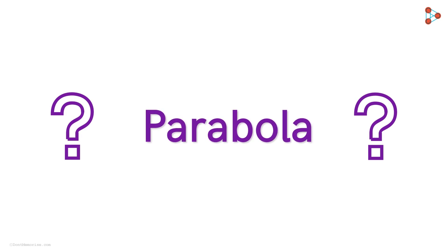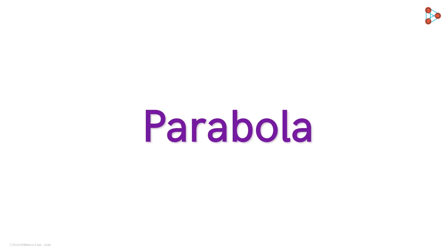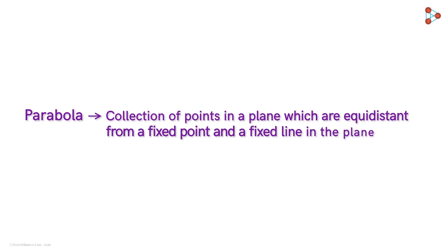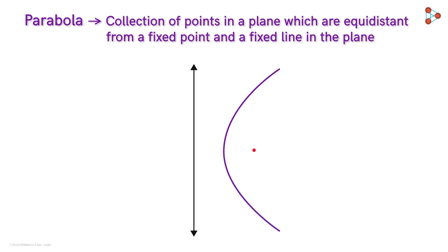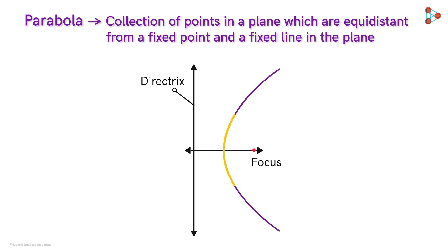Do you remember what a parabola is? Previously we saw that a parabola is a collection of points which are at an equal distance from a fixed point and a fixed line. Let us take this as our fixed point and this as our fixed line. Then the corresponding parabola will look like this. The fixed line is called the directrix of the parabola and the fixed point is called its focus. A parabola is symmetric about the line that passes through the focus and is perpendicular to the directrix — it is called the axis of the parabola. And the point where the parabola intersects with this axis is called its vertex.